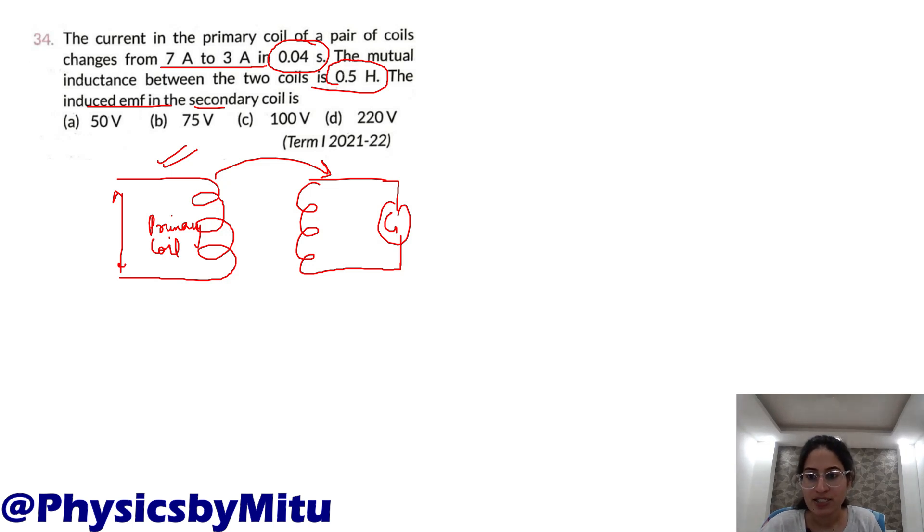Let us assume that the flux linked with the second coil is φ. This is directly proportional to the current flowing in the primary coil. To remove the sign of proportionality, we introduce a constant M, the mutual inductance or coefficient of mutual inductance. So φ = M·I_P. This is the flux linked with the secondary coil.